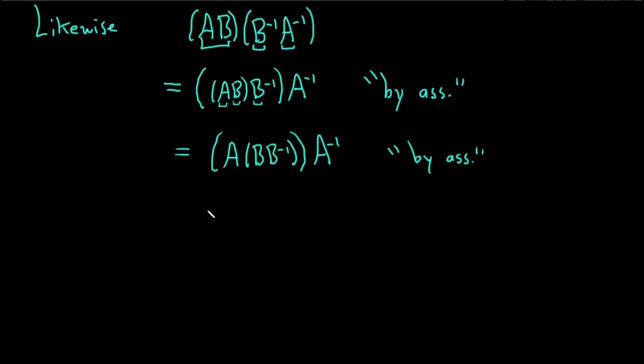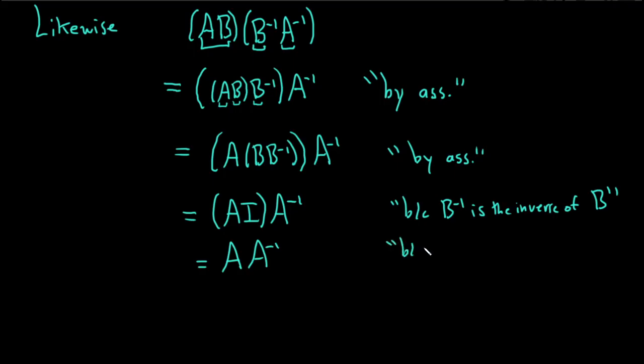And B times B inverse is equal to I. So this is A times I, going a little bit fast here. Hopefully it's not too fast. And this is because B inverse is the inverse of B. And A times I is simply A. And this is because I is the identity. And I think I forgot to mention something at the beginning. Let me finish though here. And then this is I, and this is because A inverse is the inverse of A.